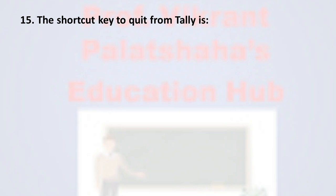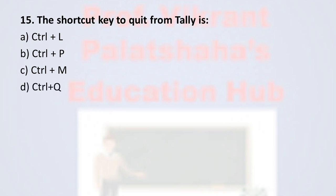Question number fifteen: The shortcut key to quit from Tally is — Option A: Ctrl+L, Option B: Ctrl+P, Option C: Ctrl+M, Option D: Ctrl+Q. The correct option is Option D, Ctrl+Q. If the user wants to quit from Tally, they press Ctrl+Q, therefore the correct option is Option D.